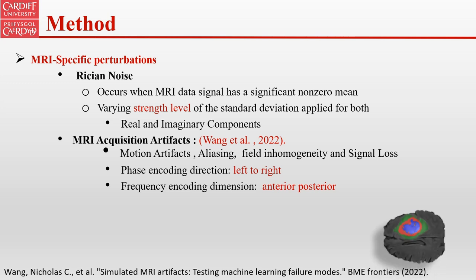For MRI-specific perturbations, we simulate the most common artifacts found in MRI scans. For example, Gaussian noise, which occurs when the MRI signal has a significant non-zero mean. Adapted from Wang et al., we simulated the following MRI acquisition artifacts: motion artifacts, aliasing, field inhomogeneity, and signal loss.